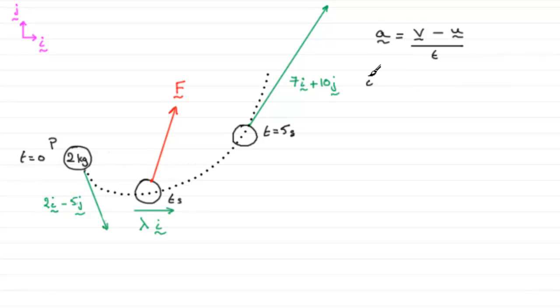So, therefore, what I've got here is that i plus 3j must equal the change in velocity. So, if we look at the change in velocity that's taken place between t equals 0 and t seconds, then the final velocity v is this one here, lambda i.